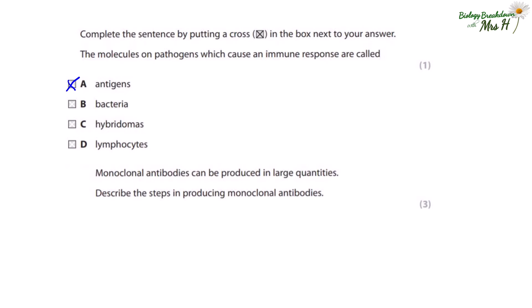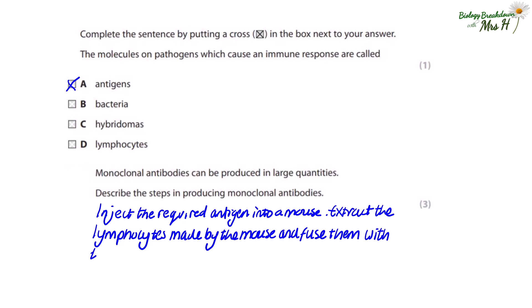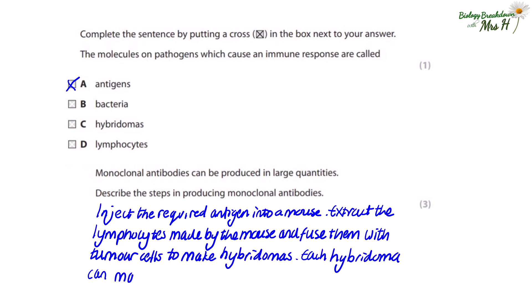Monoclonal antibodies can be produced in large quantities. Describe the steps in producing monoclonal antibodies. First we need to inject the required antigen into a mouse, extract the lymphocytes made by the mouse, and fuse them with tumour cells to make hybridomas. Each hybridoma can then make an endless supply of monoclonal antibodies.